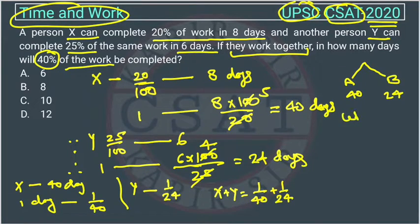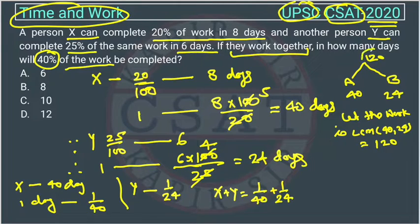So suppose here, let the work is how much? We will take the LCM of 40 and 24. So it will be like 120, right? Let the work is 120, right? If the work is 120, in how many days the X will complete this work? Total he is taking 40 days, right?